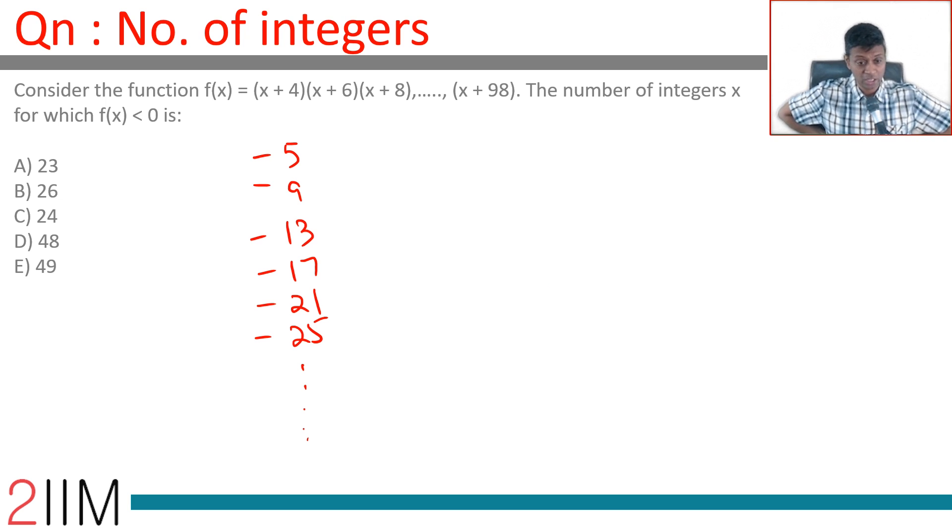The idea sitting here: if f(x) has to be negative, then we need to have an odd number of negative terms. Odd number of negative terms, the product will become negative. For an even number of negative terms, the product will become positive. So we are looking at all of this till maybe -98. Beyond that it does not work.